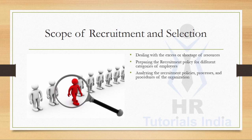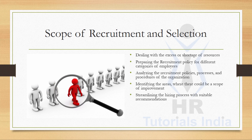Third, analyzing the recruitment policies, processes, and procedures of the organization. Each company has their own policies and procedures, and the recruitment process should take place accordingly. Fourth, identifying the areas where there could be a scope of improvement — those areas are to be identified and improvised. Fifth, streamlining the hiring process with suitable recommendations, analyzing and streamlining the recruitment process in an effective way.